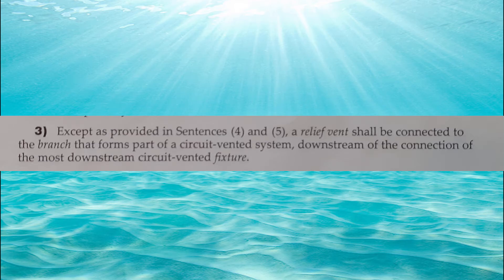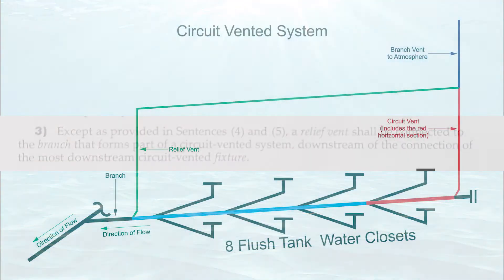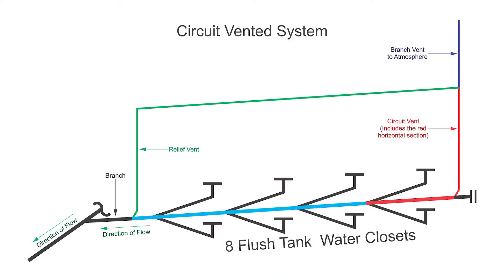Part 3. Except as provided in sentences 4 and 5, a relief vent shall be connected to the branch that forms part of the circuit vented system, downstream in the connection of the most downstream circuit vented fixture. So this is an extreme roundabout way of saying you need a relief vent, and it needs to be on the lowest end of the circuit vented system.